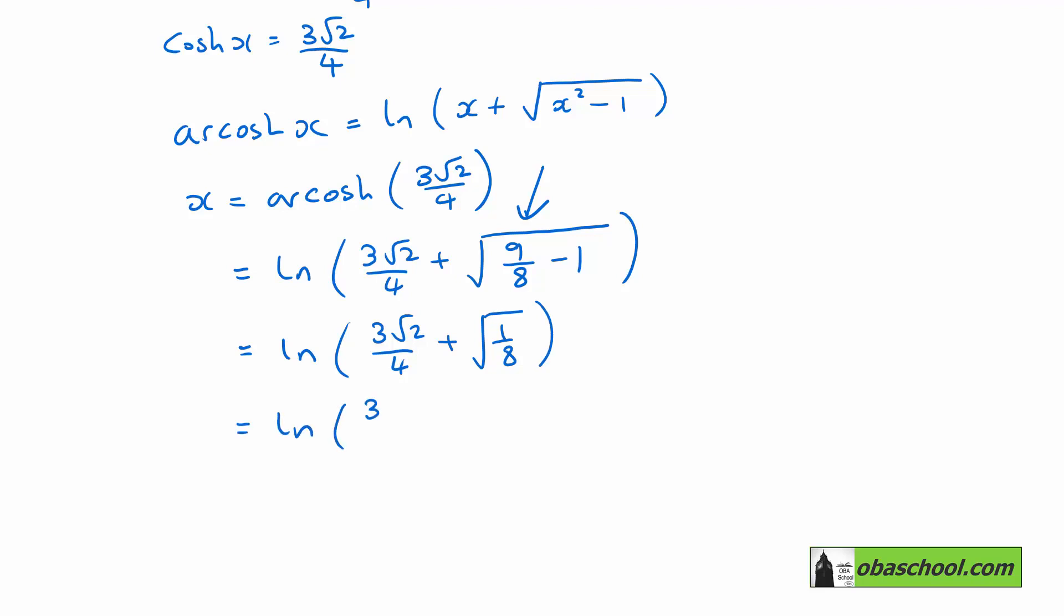So that's log 3 root 2 on 4 plus 1 on root 8, 1 on 2 root 2, which is root 2 on 4. So that's the log of 3 root 2 on 4 plus root 2 on 4. That's 4 root 2 on 4, which is just root 2.